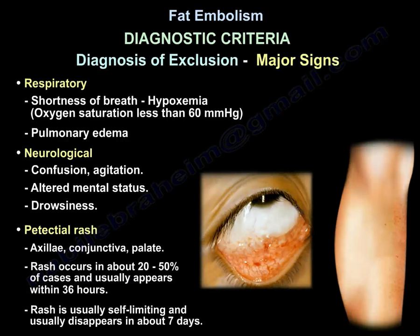There are established diagnostic criteria for fat embolism, and it is really a diagnosis of exclusion. You need to have one of these major signs: respiratory — shortness of breath, hypoxemia with oxygen saturation less than 60 mmHg, or pulmonary edema; neurological — confusion, agitation, altered mental status, or drowsiness; or petechial rash in the axilla, conjunctiva, or palate. Rash occurs in about 20 to 50% of cases.